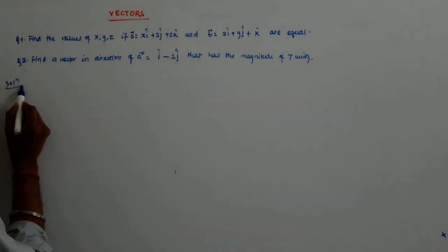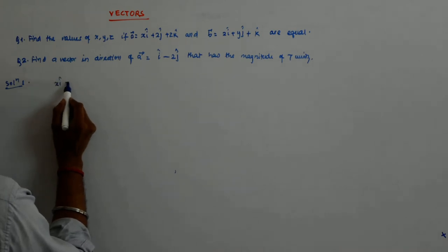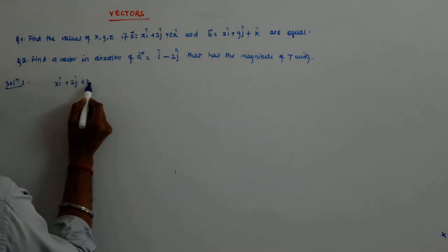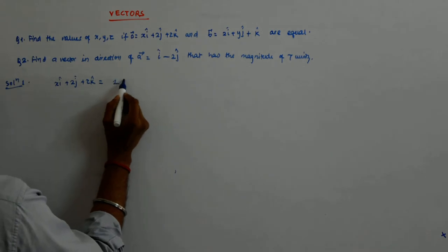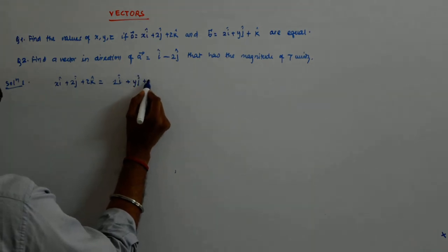So what do we get? We have XI cap plus 2J cap plus ZK cap is equal to 2I cap plus YJ cap plus K cap.